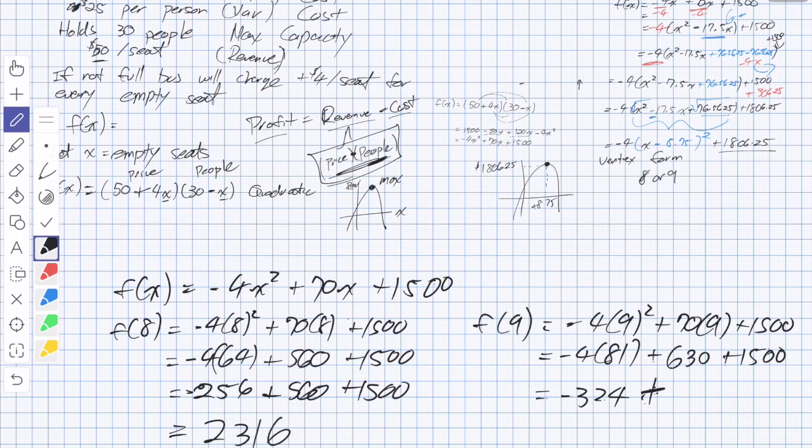The other one is negative 324 plus 630 plus 1,500. And again, we're counting nickels and dimes here, but this is actually what the question is asking us. So it's better to have nine empty seats. Now, this is optimizing at nine empty seats. So all that did was tell us the number of empty seats. And it gives us a price.